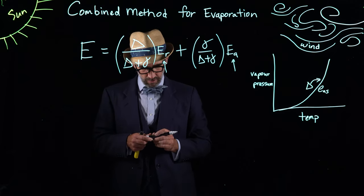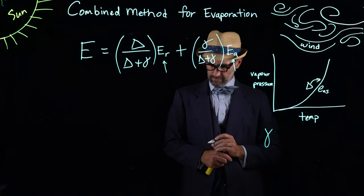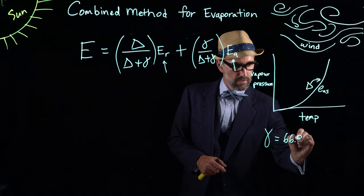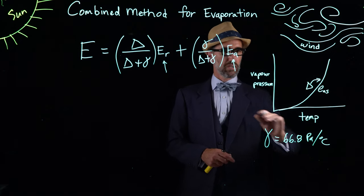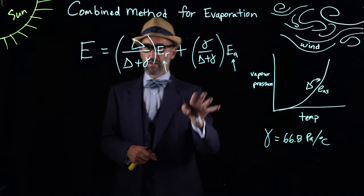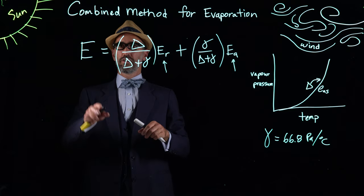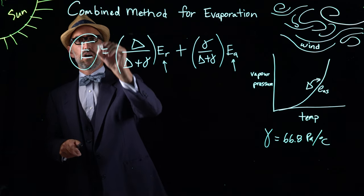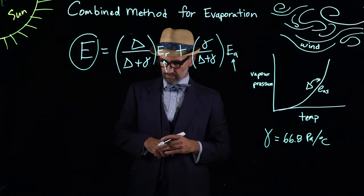That psychometric constant is 66.8 pascals per degree C. We're going to use these: we're going to calculate delta, we're going to use gamma, and our previous results for the two rates of evaporation to combine all these to calculate an overall rate of evaporation.